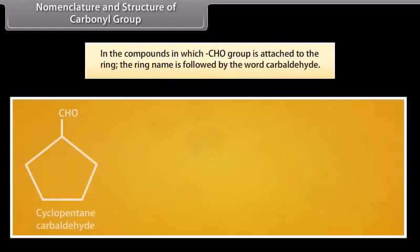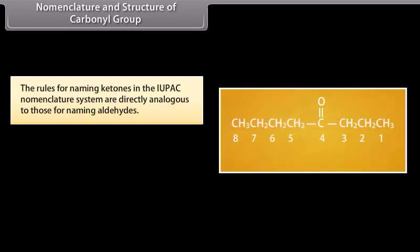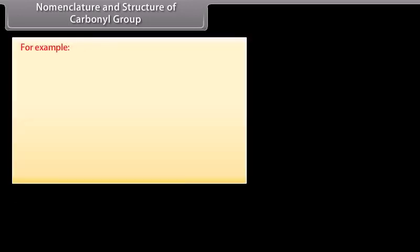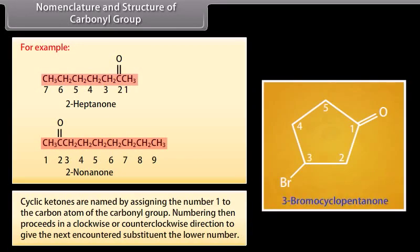In compounds in which the aldehyde group is attached to a ring, the ring name is followed by the word 'carbaldehyde'. The rules for naming ketones in the IUPAC system are directly analogous to those for naming aldehydes. In ketones, the name is obtained by replacing the 'e' of the parent alkane by 'one', and the location of the carbonyl carbon is indicated with a number. For example: 2-heptanone, 2-nonanone. Cyclic ketones are named by assigning the number 1 to the carbonyl carbon, with numbering proceeding clockwise or counterclockwise to give substituents the lower number.